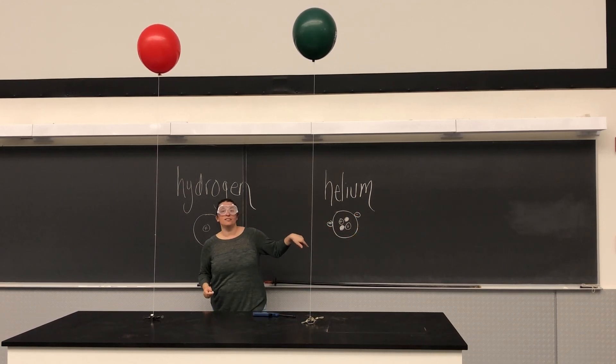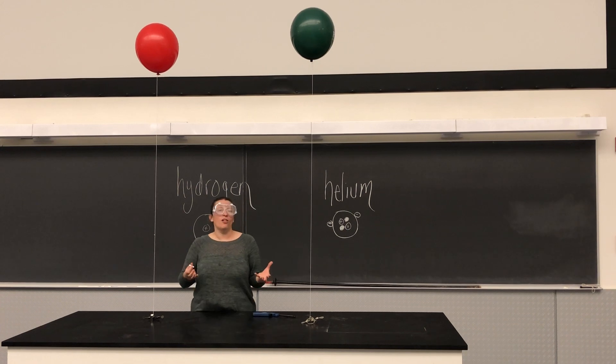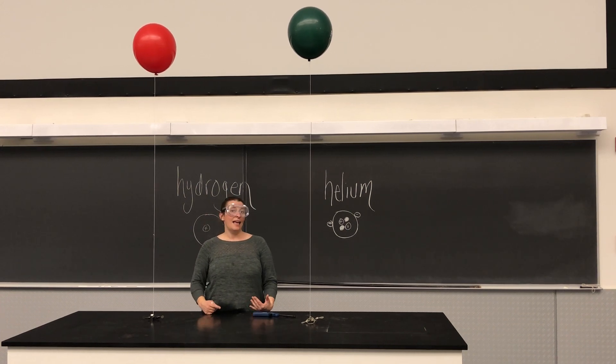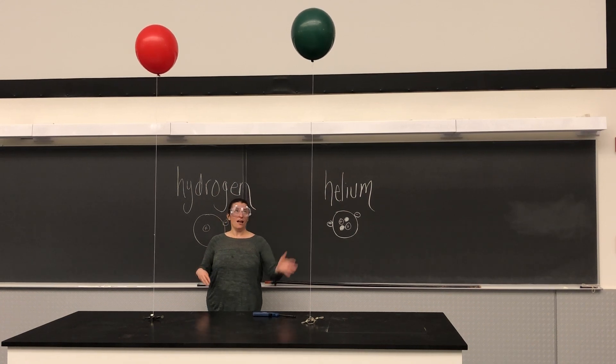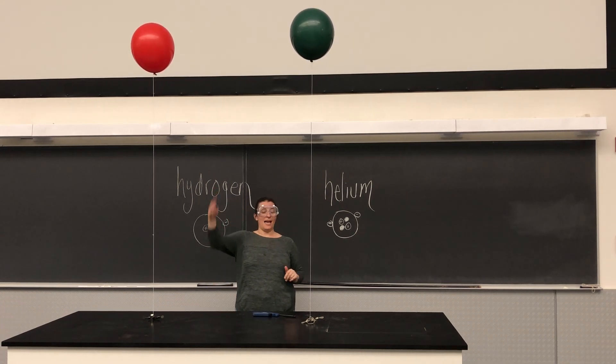Two valence electrons, and so that way, it's got its full outer shell, that means it's generally happy. So now let's think about what that means as far as the reactivity of this element versus that element.